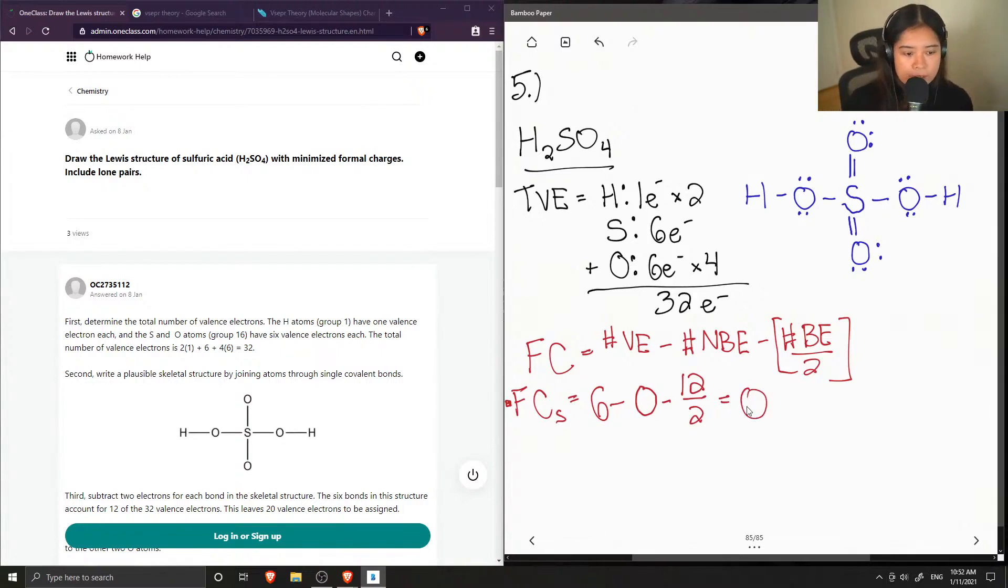And then if we were to do the same thing for all the other oxygens and hydrogen, you'll notice that everything also has a formal charge of zero. So this is the correct Lewis structure.